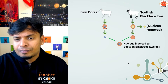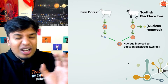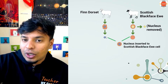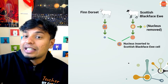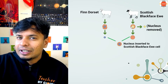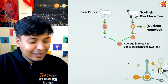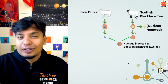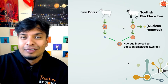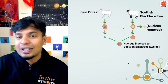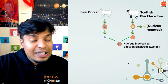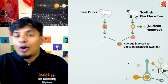From the Fin Dorset, they took one cell and extracted just the nucleus. From the Scottish Black Face, they took the egg — the female gamete — but removed its nucleus entirely. That means all the genetic material — the genes, the DNA — everything was removed from the egg. The egg was left with only the cytoplasm, no nucleus.